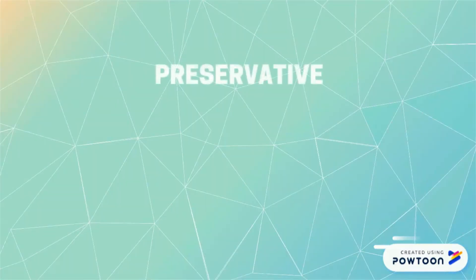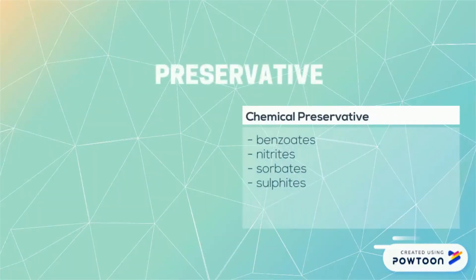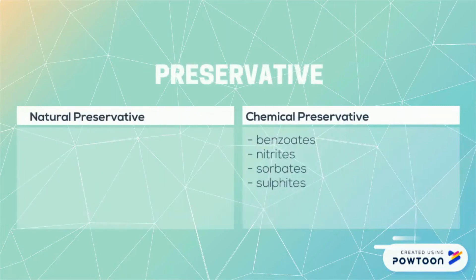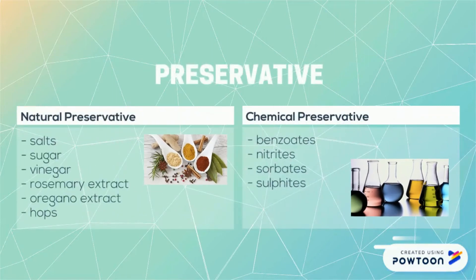There are two types of preservatives: chemical preservatives and natural preservatives. Natural preservatives can be found in nature, and chemical preservatives are made in a lab.